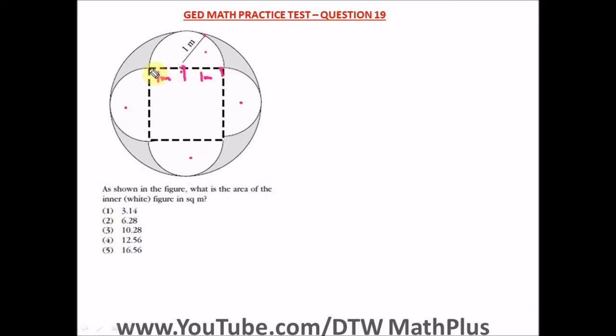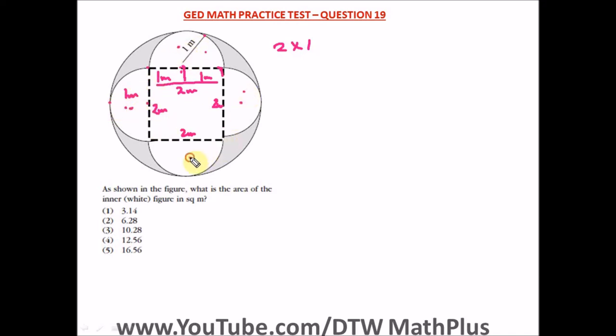This one-meter measurement is like the radius, and the diameter is two times the radius, which is two times one. So from one side to the other, the total length is two meters. That means one side of the square is two meters. Since all semicircles are the same, each radius is one meter and the diameter is two meters on every side.